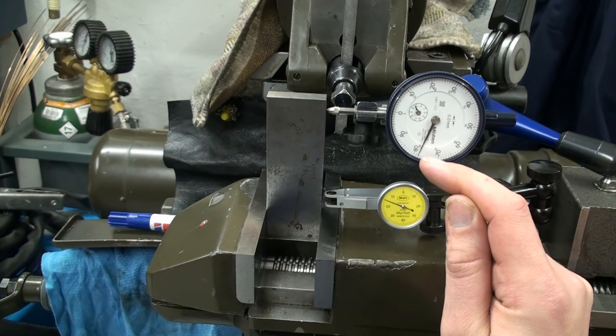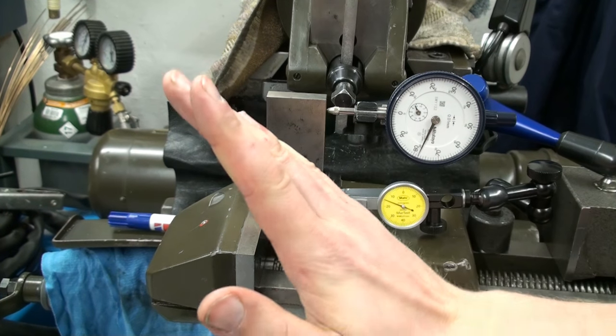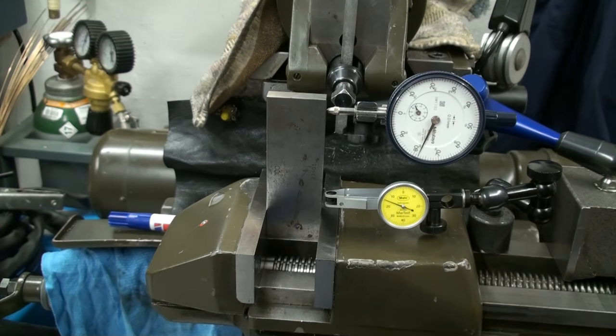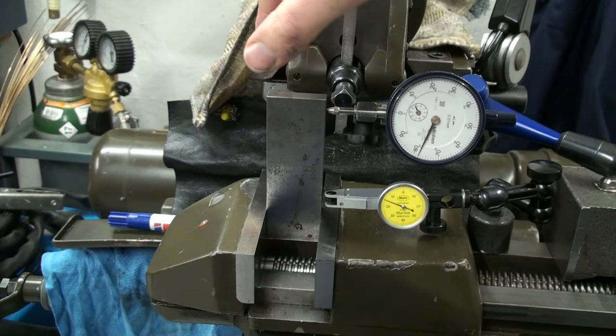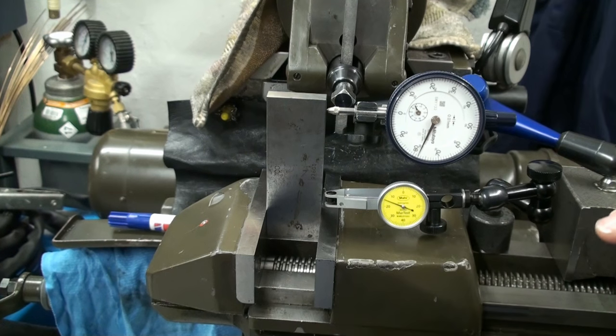And the upper one shows 0.22mm, so the part is tilted that direction pretty much. It's very significant, and that comes really into play when you want to square up stock. You have to take that into consideration and you have to know it.